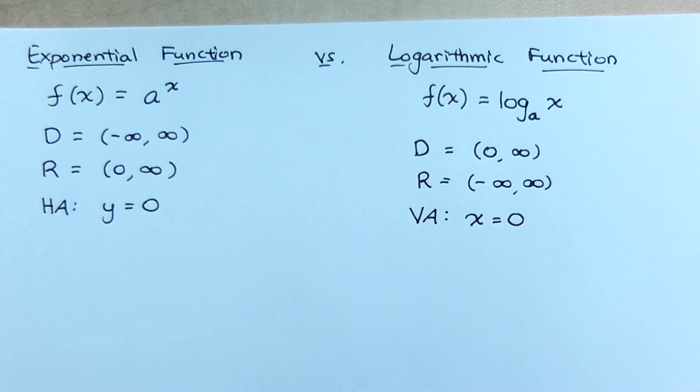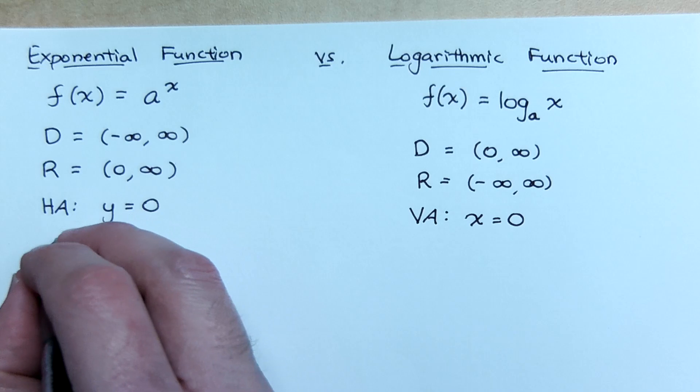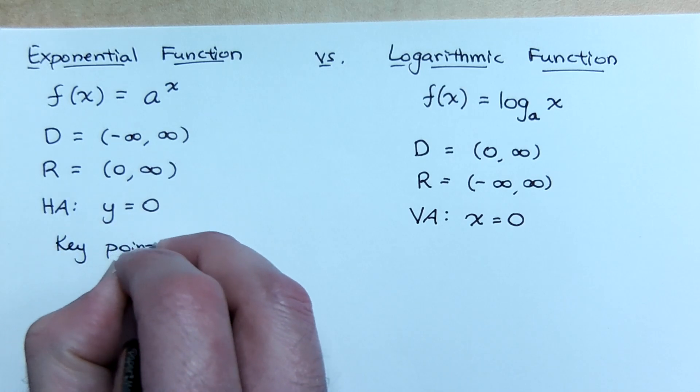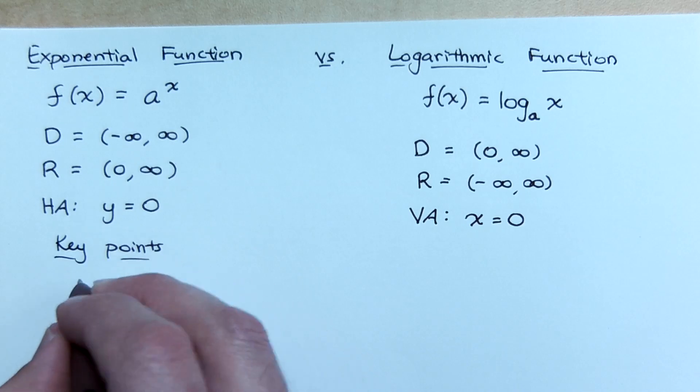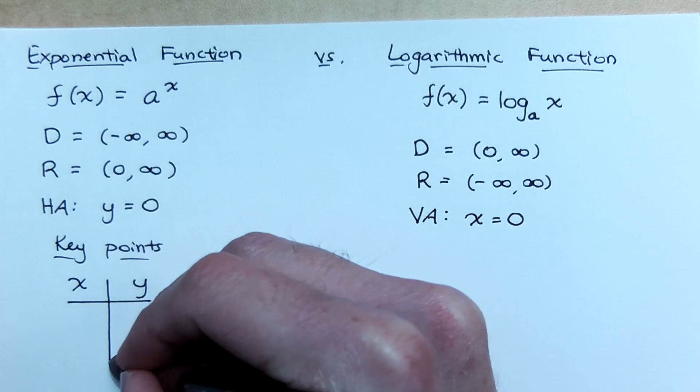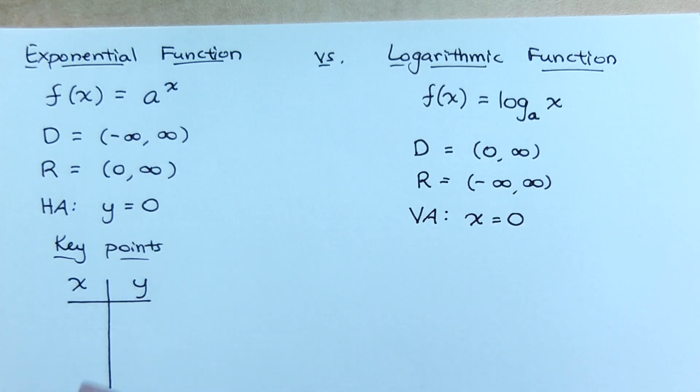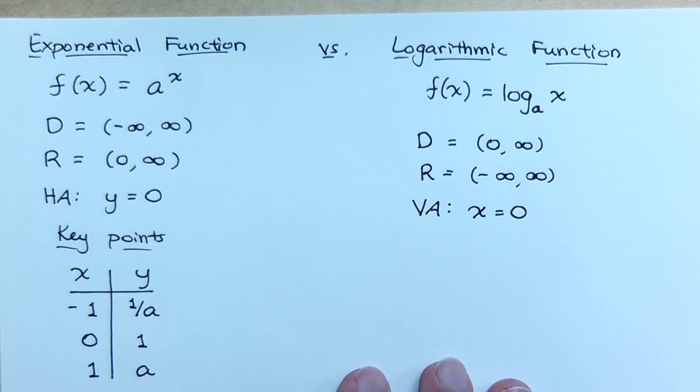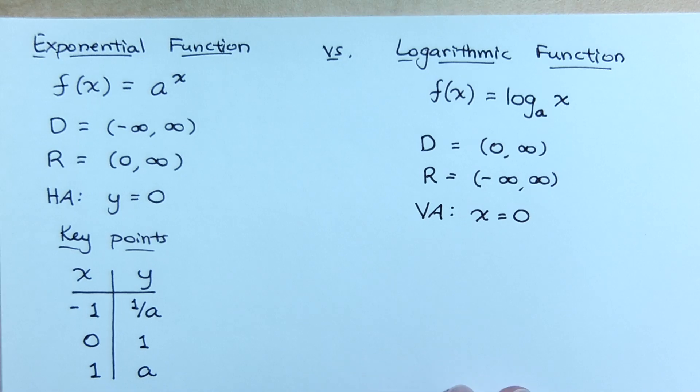Now, let's talk about the key points that we would have had for the exponential. So for your exponential, we made a t-table of values, and I said these are the guys that form our basic shape. If I plug in negative one, I get the reciprocal of the base, one over a. If I plug in zero, I get one. If I plugged in one, I would get a. Those were the key points for the exponential.